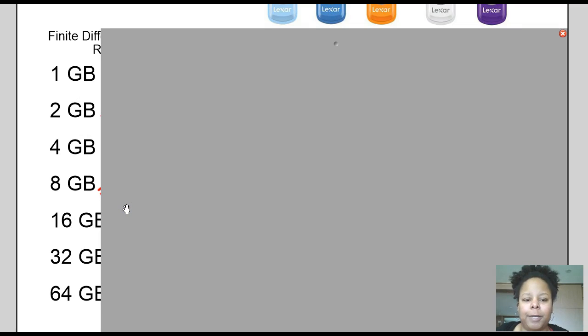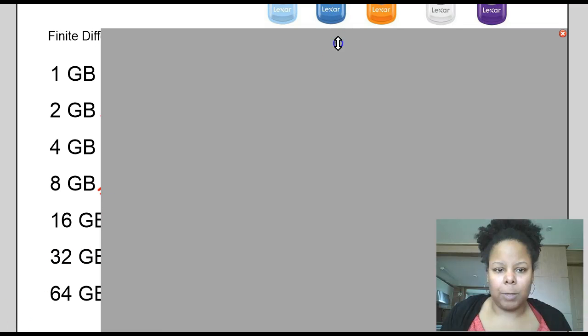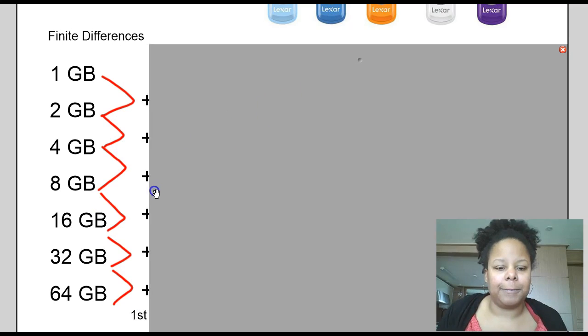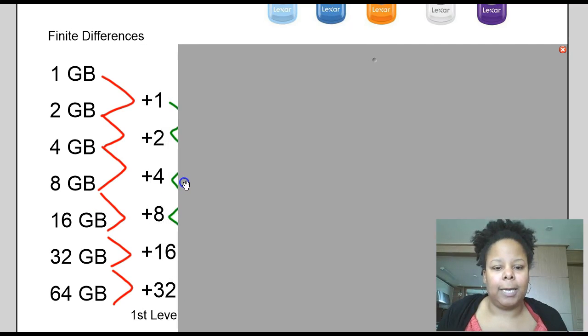We're going to start off at one of the options that were listed, which was 1 gigabyte, 2 gigabyte, 4 gigabyte, 8 gigabyte, 16 gigabyte, and then 32 and 64 gigabytes. And we're going to use finite differences to try and figure out if this is a linear, quadratic, cubic function. So we look at the first level of finite differences, and we see that the rate of change is not constant. So since it's not constant at the first level, that means this is not a linear function.